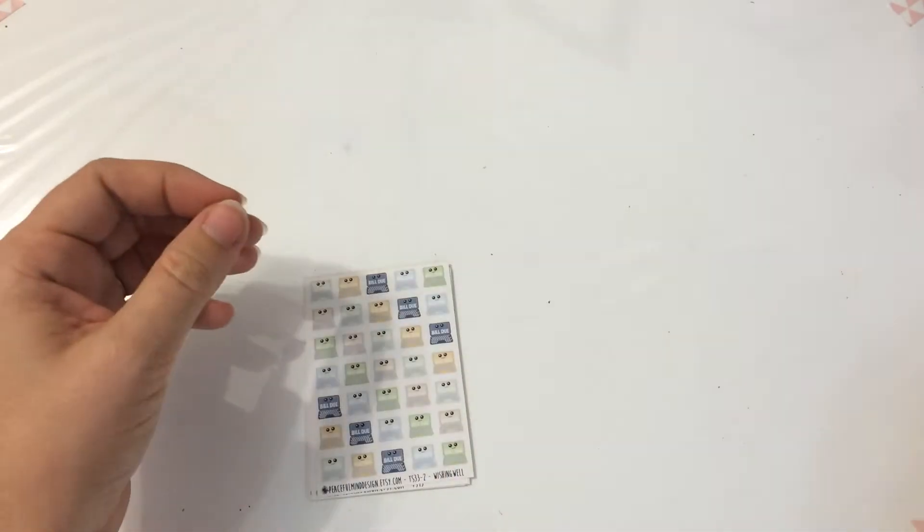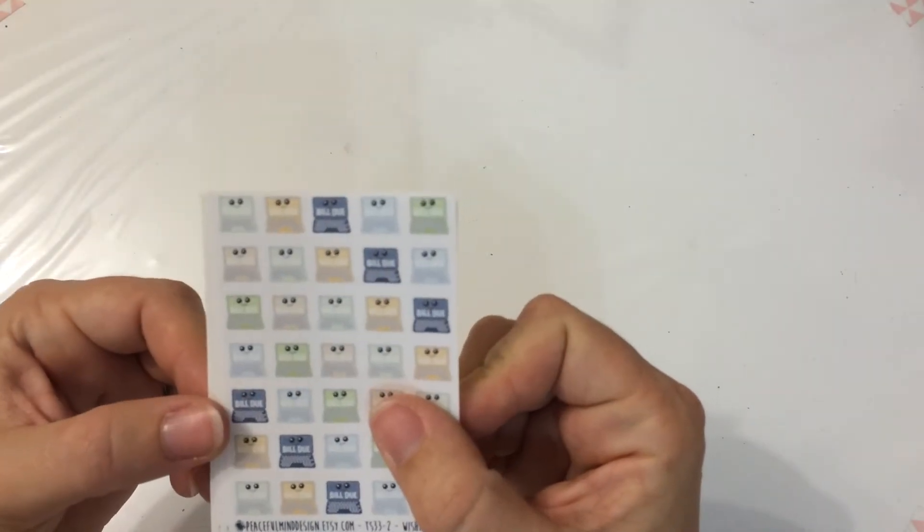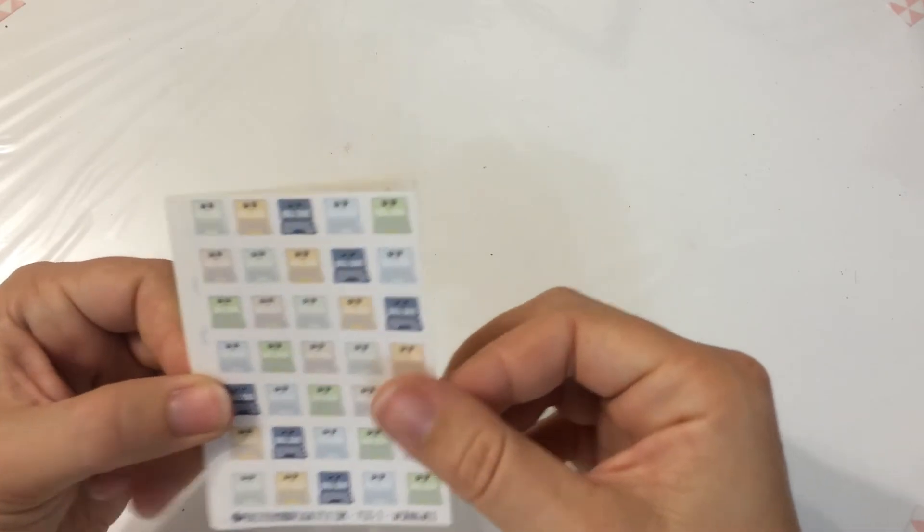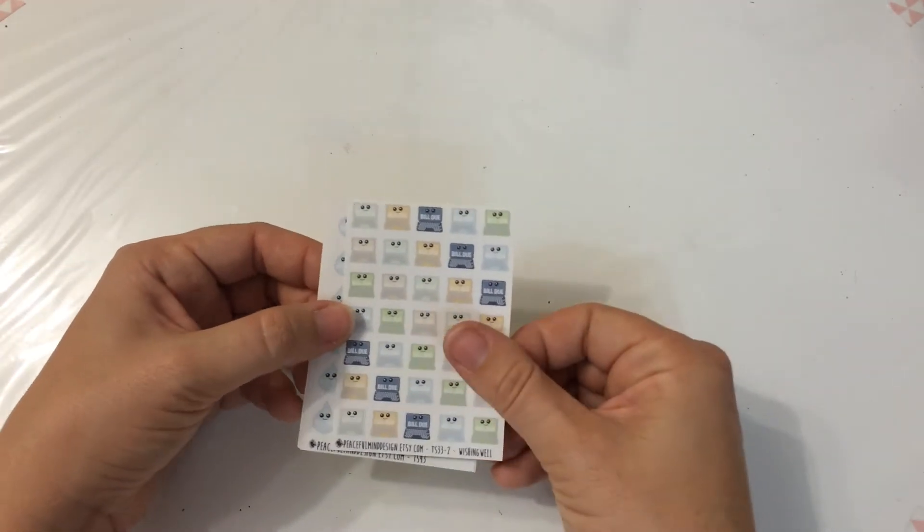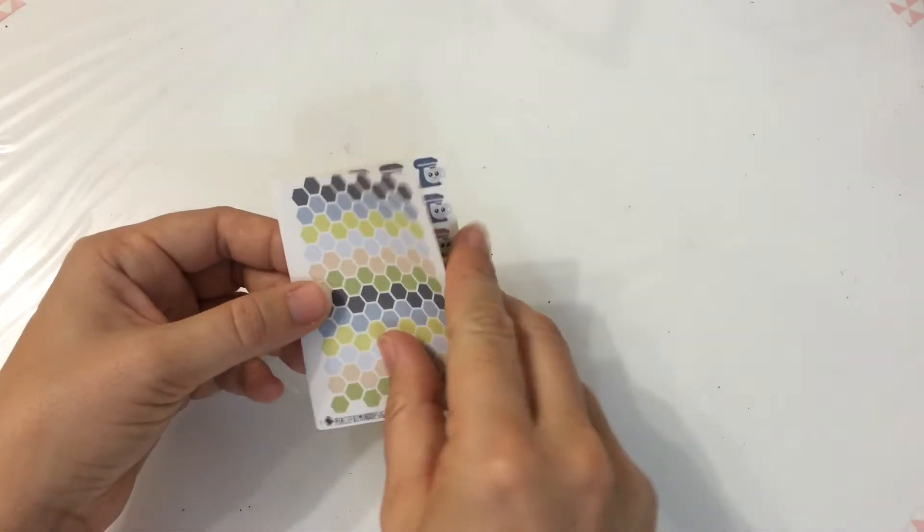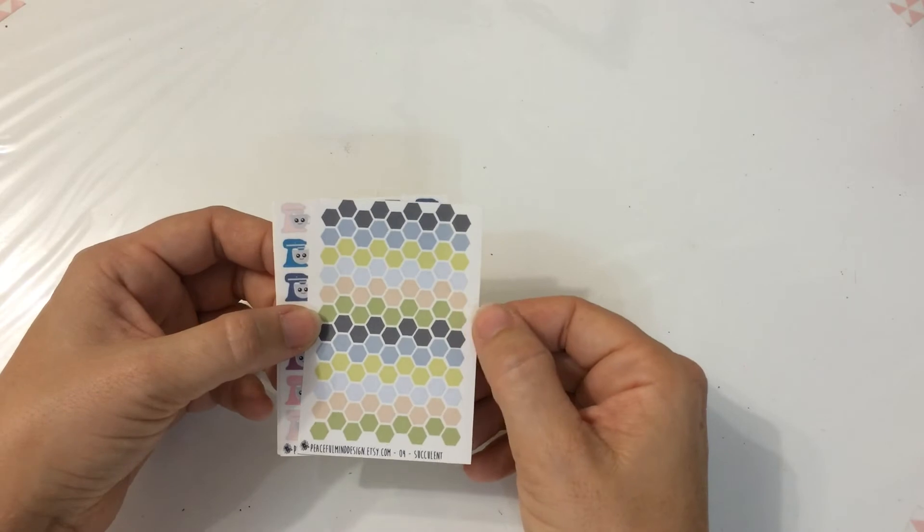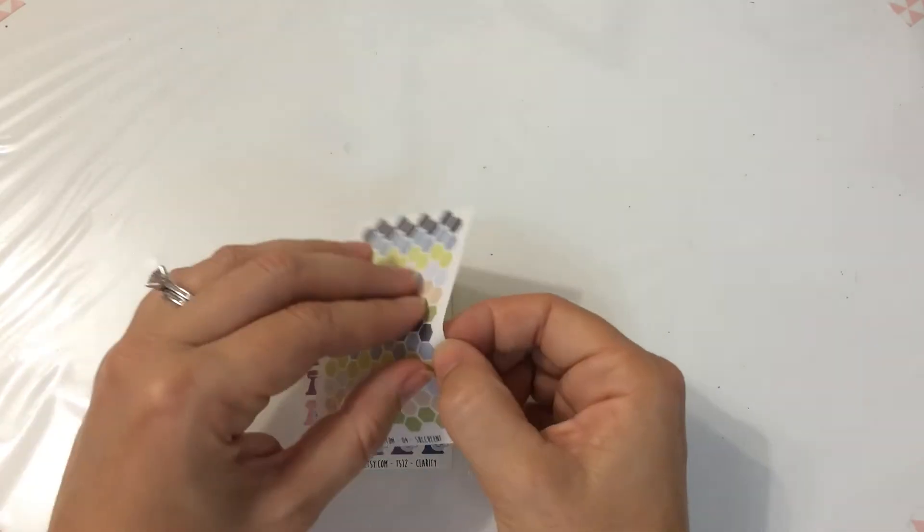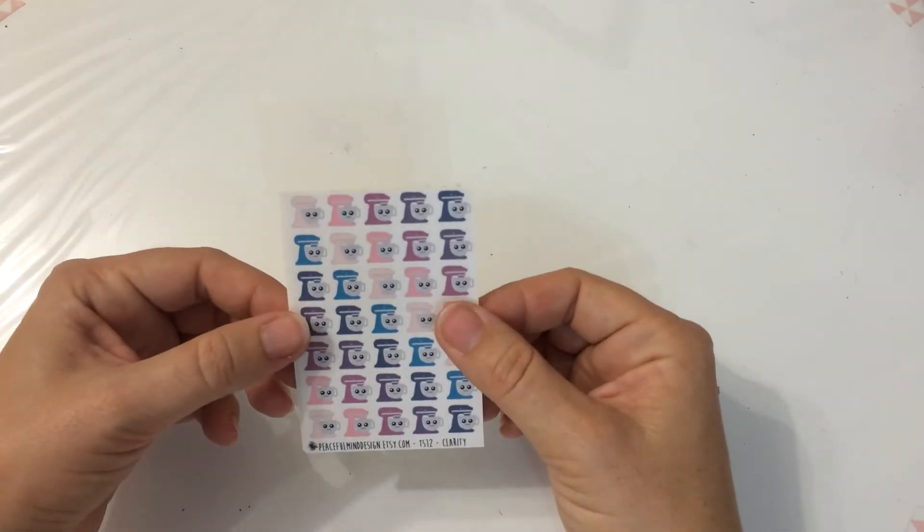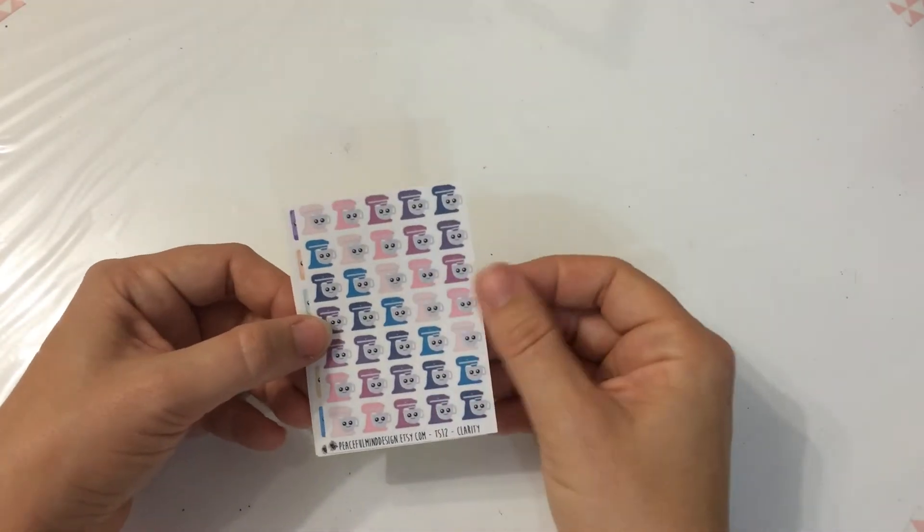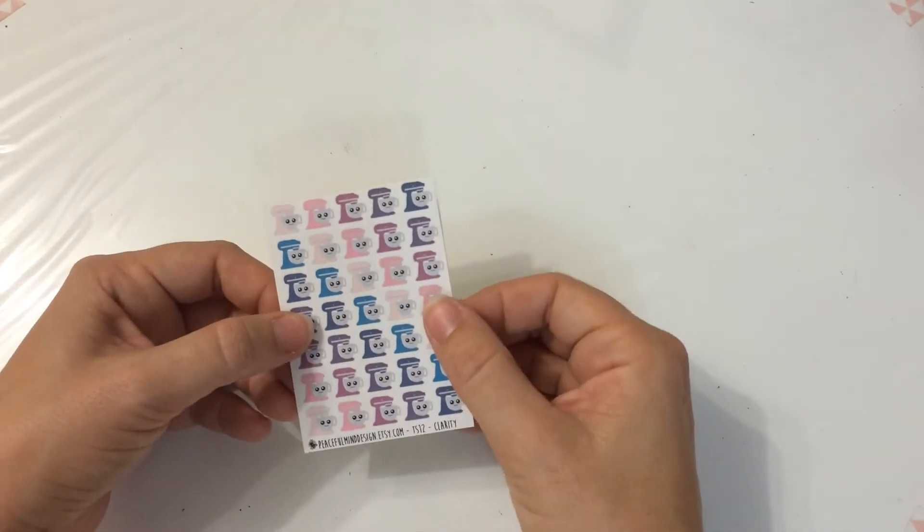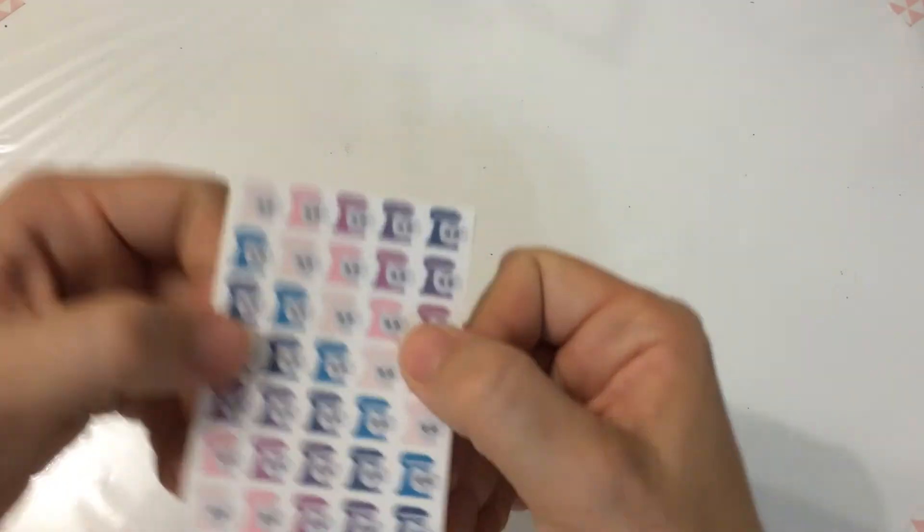Computer bill due, so maybe internet bill due. I never really mark bills that are due so maybe I should start doing that. Water bill. These I will use. They're very cute. Tiny. Mix masters. So for baking. I do make cupcakes quite a lot with my daughter. Could mark that. There's a really pretty color. So that is a color scheme that I would normally pick. So pretty.